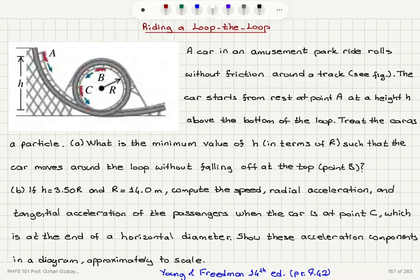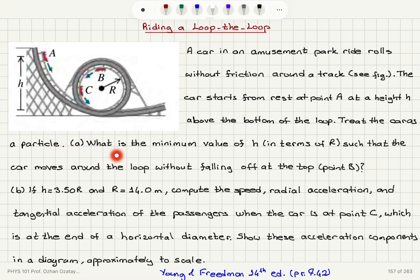Riding a loop-to-loop. A car in an amusement park ride rolls without friction around a track, as you can see in the figure. The car starts from rest at point A at a height H above the bottom of the loop. Treat the car as a particle. What is the minimum value of H in terms of capital R, the radius of the loop, such that the car moves around the loop without falling off at point B?